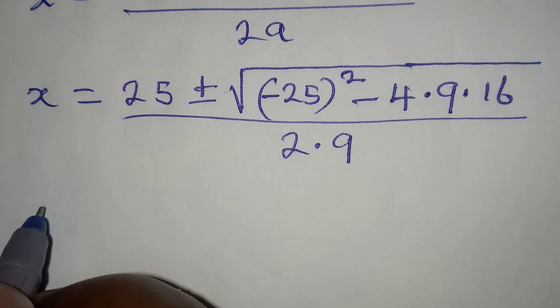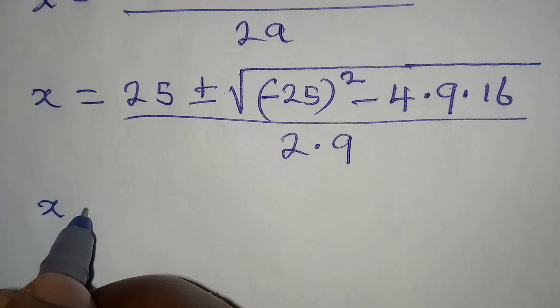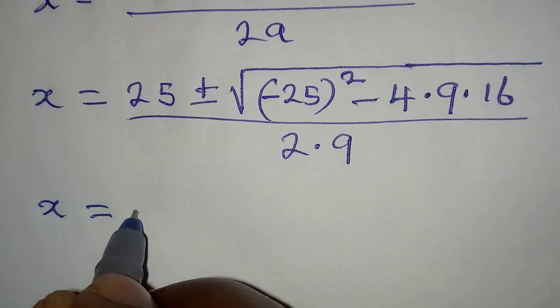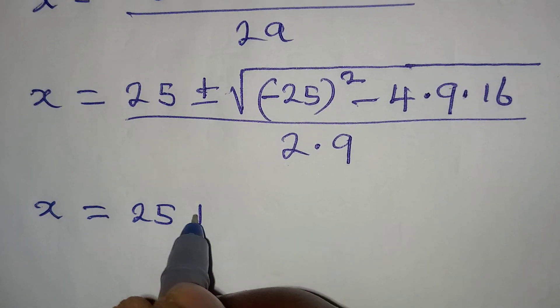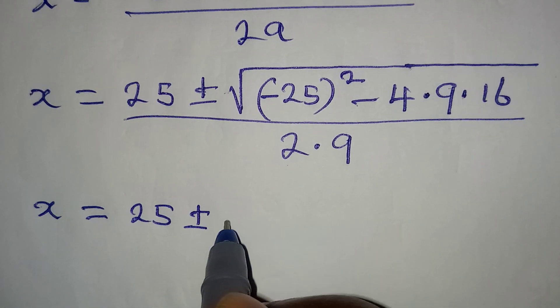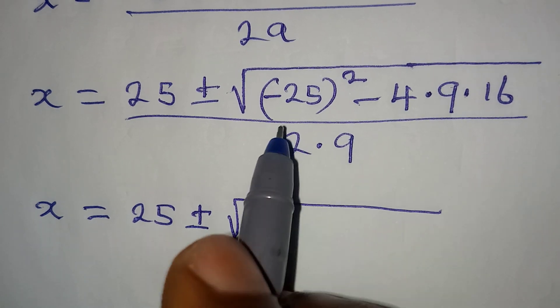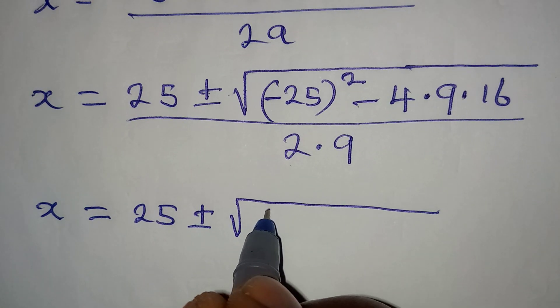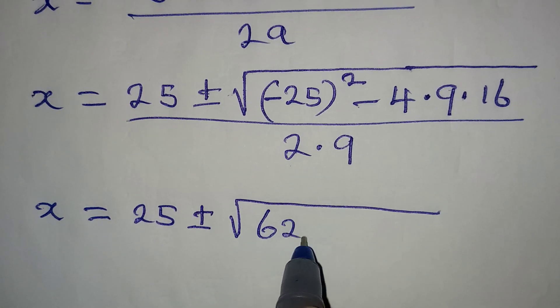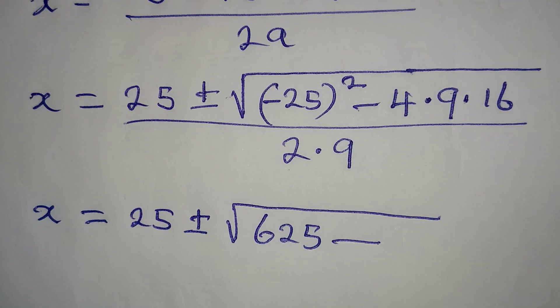From here, x will be equal to 25 plus or minus the square root of 625 minus...